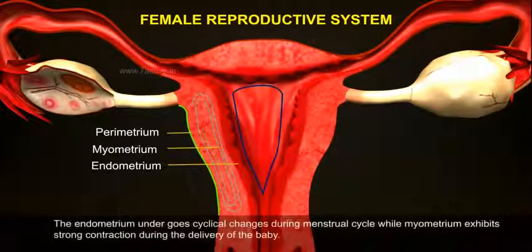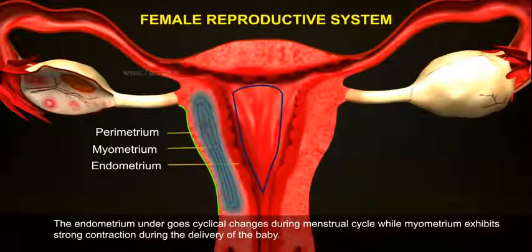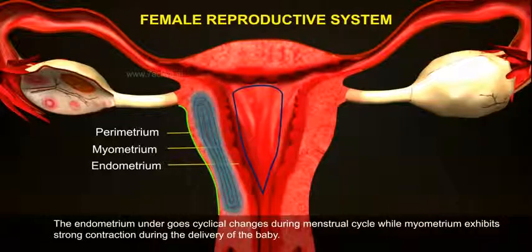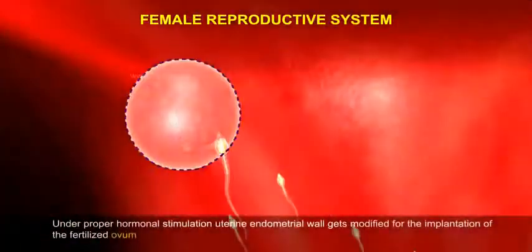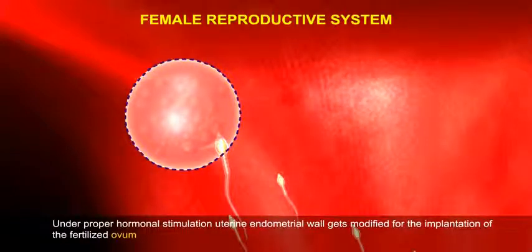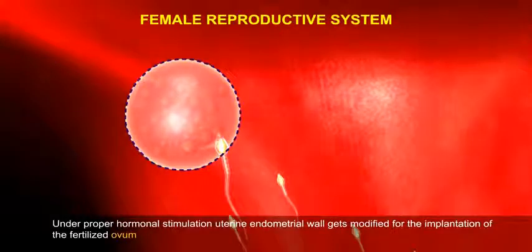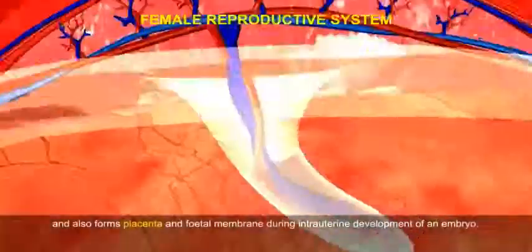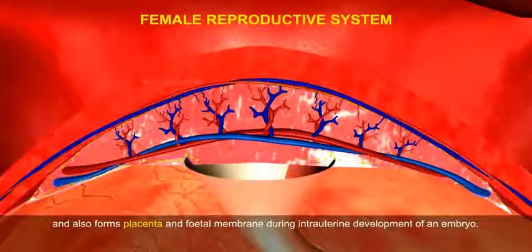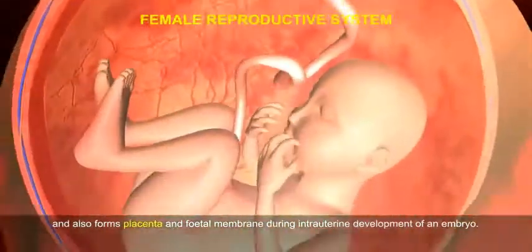The endometrium undergoes cyclical changes during the menstrual cycle, while the myometrium exhibits strong contraction during the delivery of the baby. Under proper hormonal stimulation, the uterine endometrial wall gets modified for the implantation of the fertilized ovum and also forms placenta and fetal membrane during intrauterine development of an embryo.